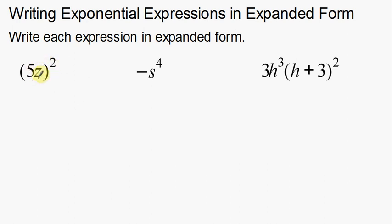What this parenthesis does—this tells me that it's being squared. The entire parenthesis, the 5 and the z, are both being squared. So that means I'm going to have two of these. I'm going to have a 5, a 5, a z, and a z.